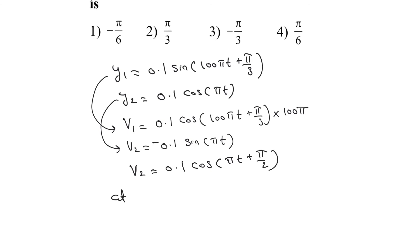At t equals 0, the phase of velocity of the first particle equals π/3. At t equals 0, the phase of the second particle is π/2.